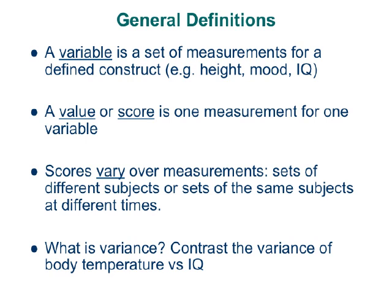A value or a score is one measurement for the variable, for the construct. It is a single score, a single value that refers to one subject's measurement on the construct.